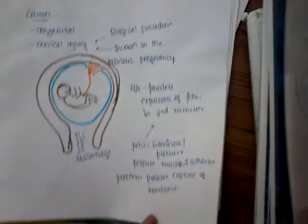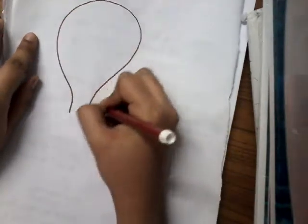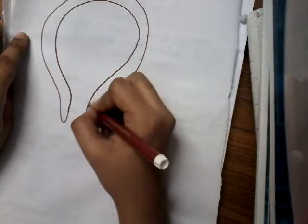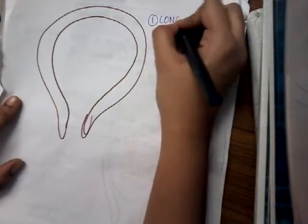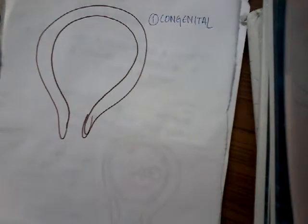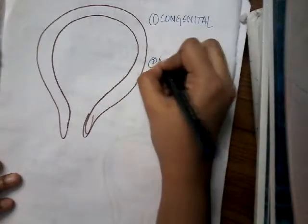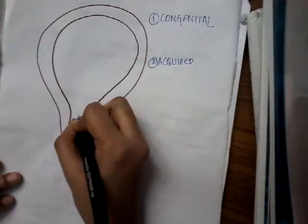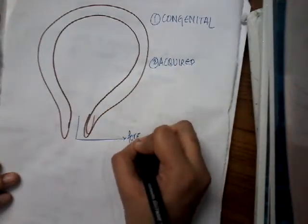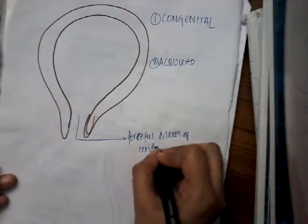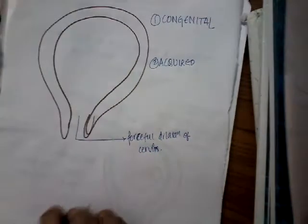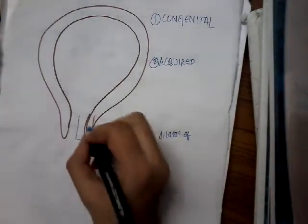Let me show all the causes of cervical insufficiency in a diagrammatic representation. What are the causes? One, as you know, it is congenital — you cannot change this congenital condition. The other causes are acquired causes which can be modified. These acquired conditions include, first, whenever we do forceful dilatation of the cervix. It can be for any reason — it can be for miscarriage, whenever there is some conceptus present in the uterus and you have to dilate and do evacuation.